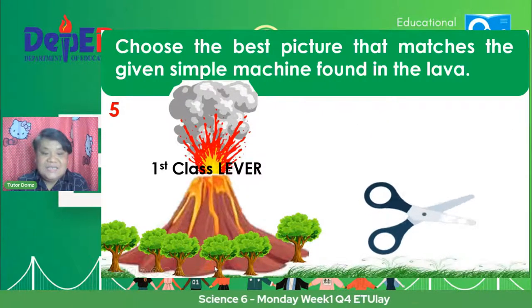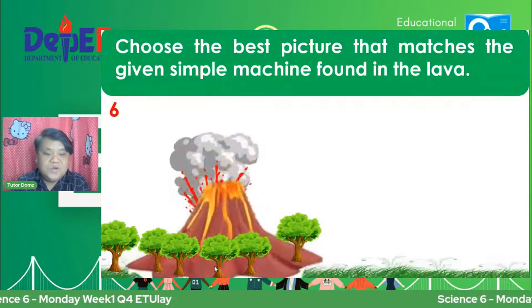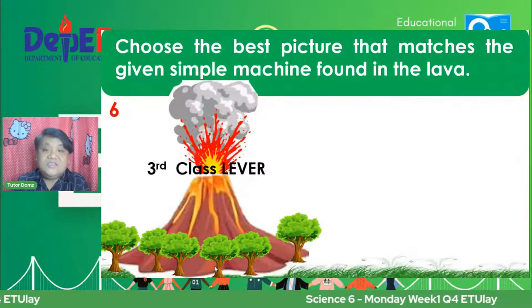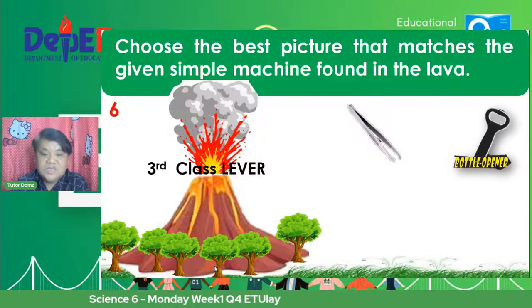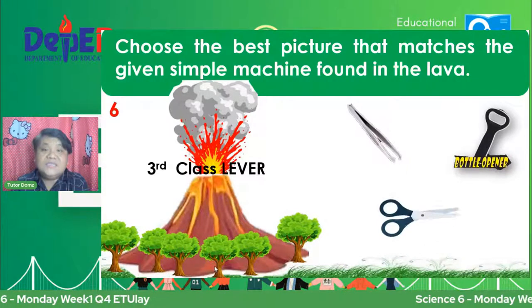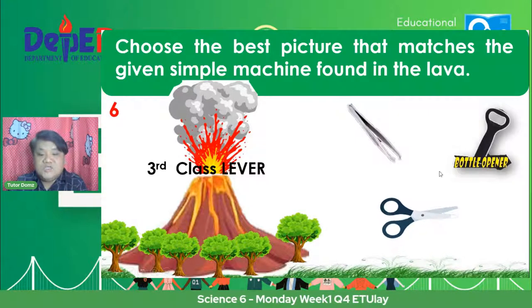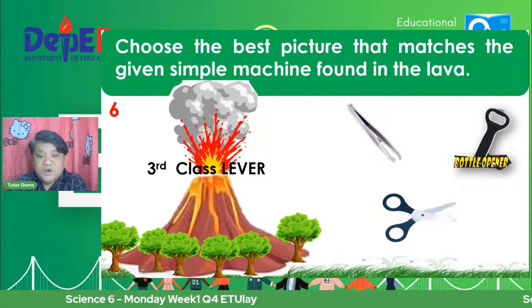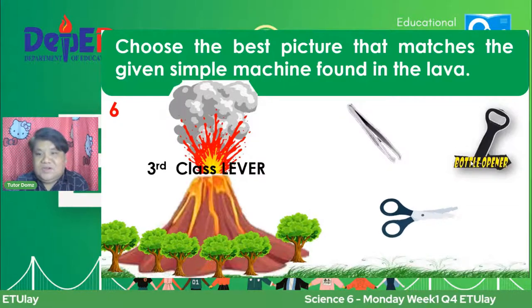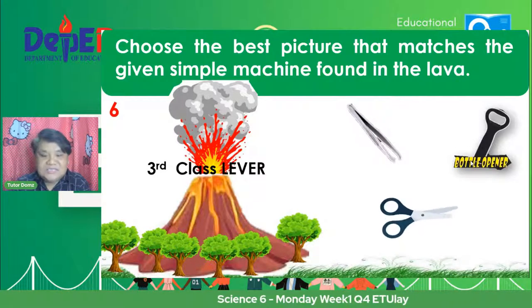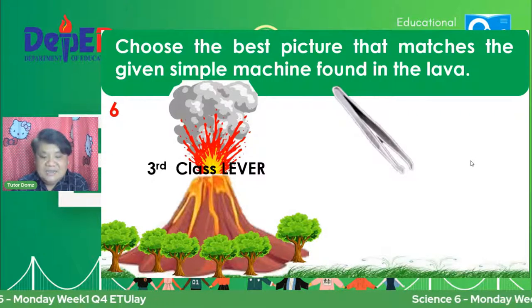For the next activity, we have the third class lever. Is it the tweezer, the bottle opener, or the scissor? Syempre, scissor hindi na siya kasi first class lever siya. So we have two pictures: the tweezer or the bottle opener. Alin kaya dyan ang third class lever? And the answer is the tweezer. So that is the example of a third class lever.